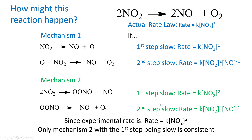Summarizing our four possibilities — mechanism one step one slow, mechanism one step two slow, mechanism two step one slow, mechanism two step two slow — the only one consistent with the experimental rate law K[NO2]² is mechanism two with the first step being slow. That doesn't prove it's right; it's just the only one that's consistent. We know all the others are wrong. To get more confidence, we might try to detect the OONO intermediate experimentally.